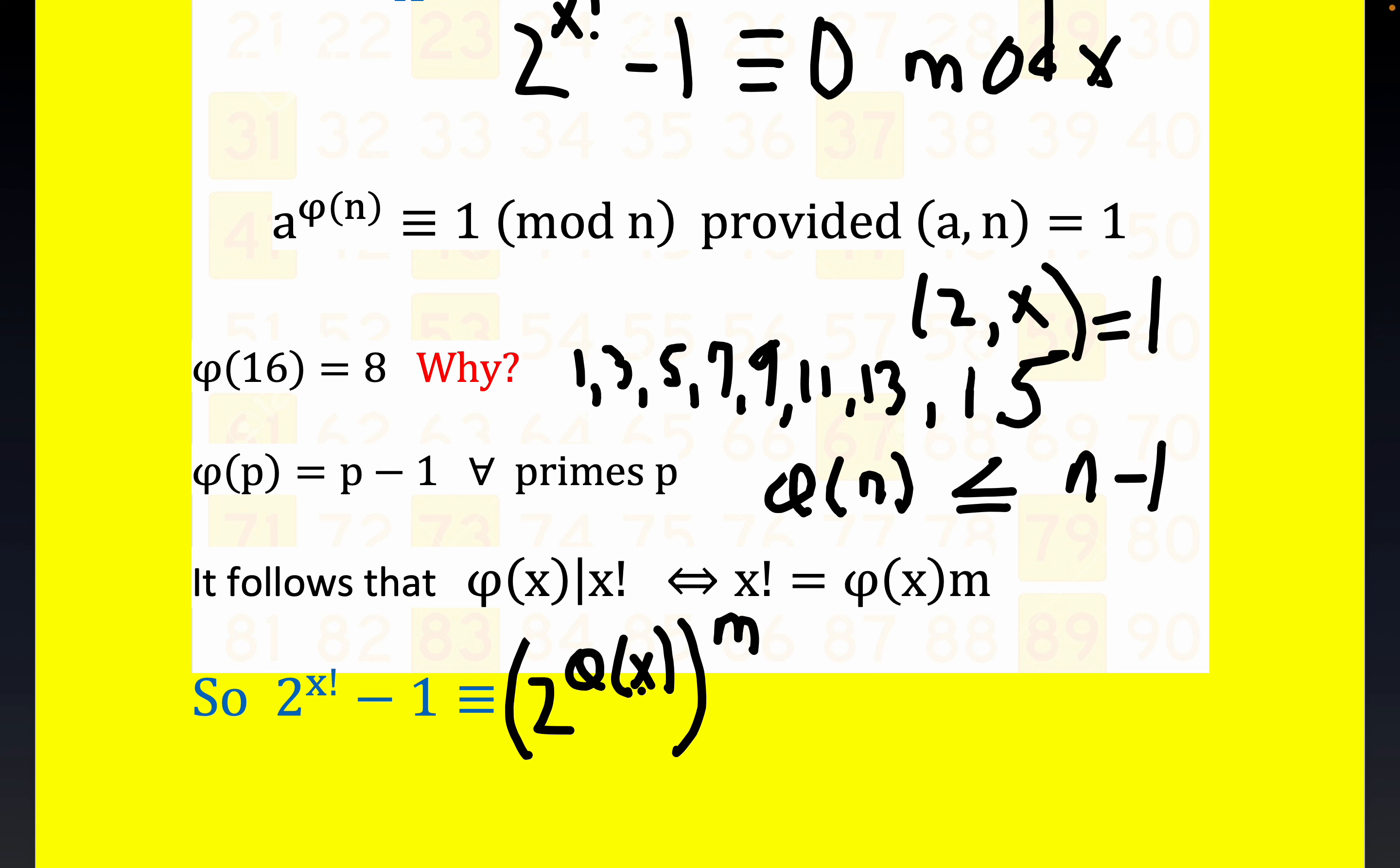Properties of exponents, folks. Again, remember a to the m, if you have a to the m n, that's equal to n copies of m copies. So n times m copies. So you have a to the m n. That's the property we just used right here.